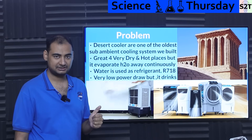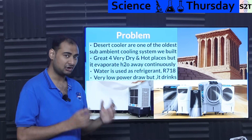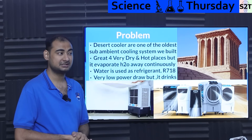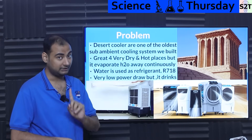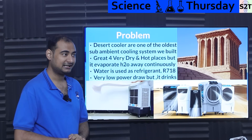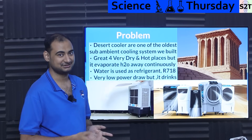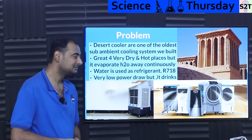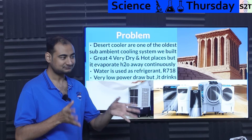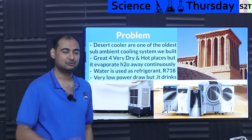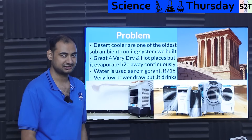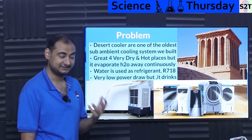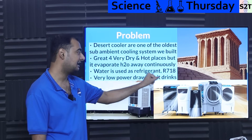It works amazingly well for very dry and very hot places. That's the reason why these structures are found everywhere that's very desert-like. However, it drinks water continuously — there's no PWM in this. Water is used as a refrigerant in this sort of system, and yes, water does have a refrigeration designation: R718.